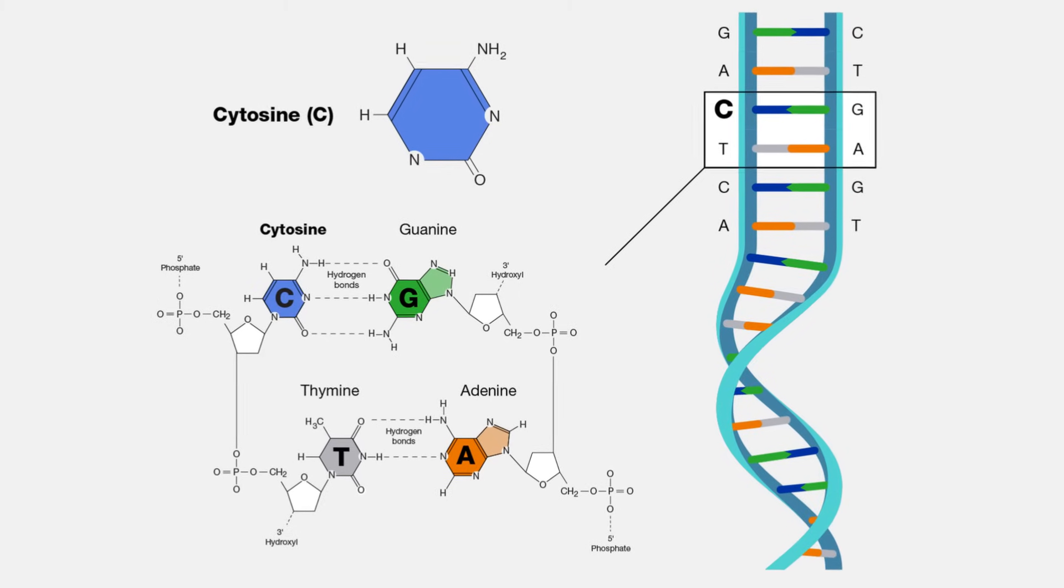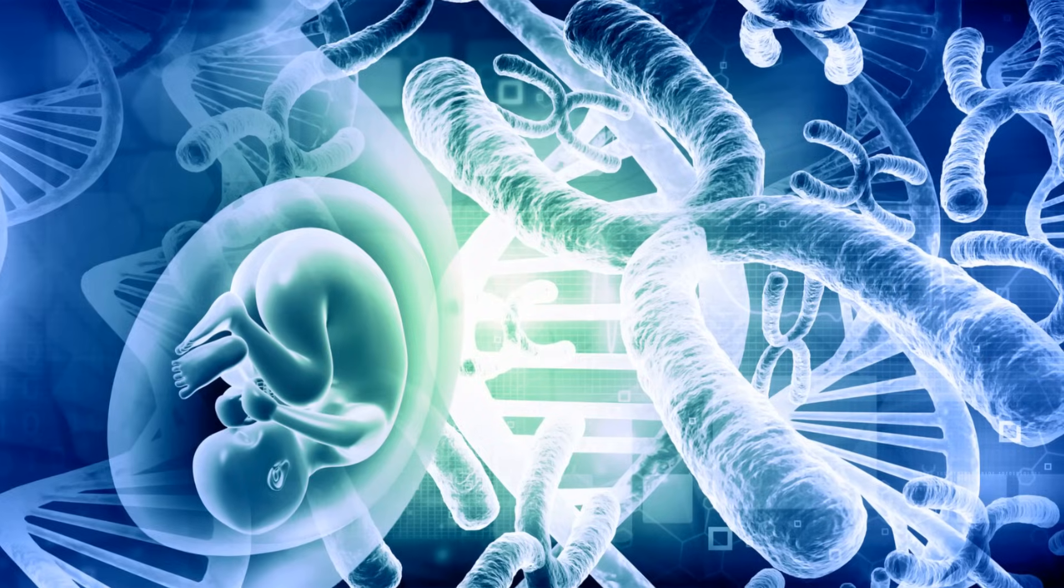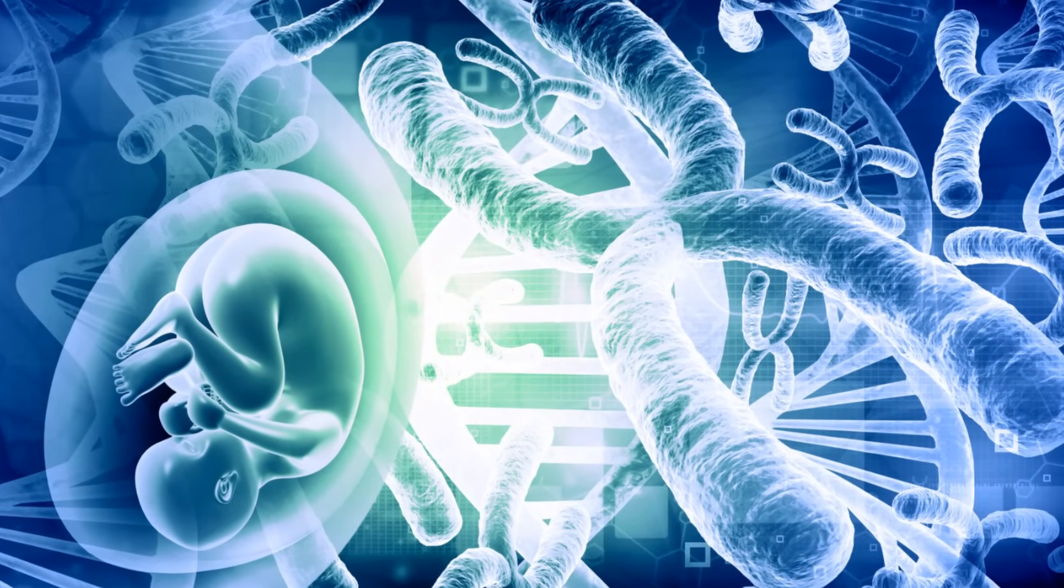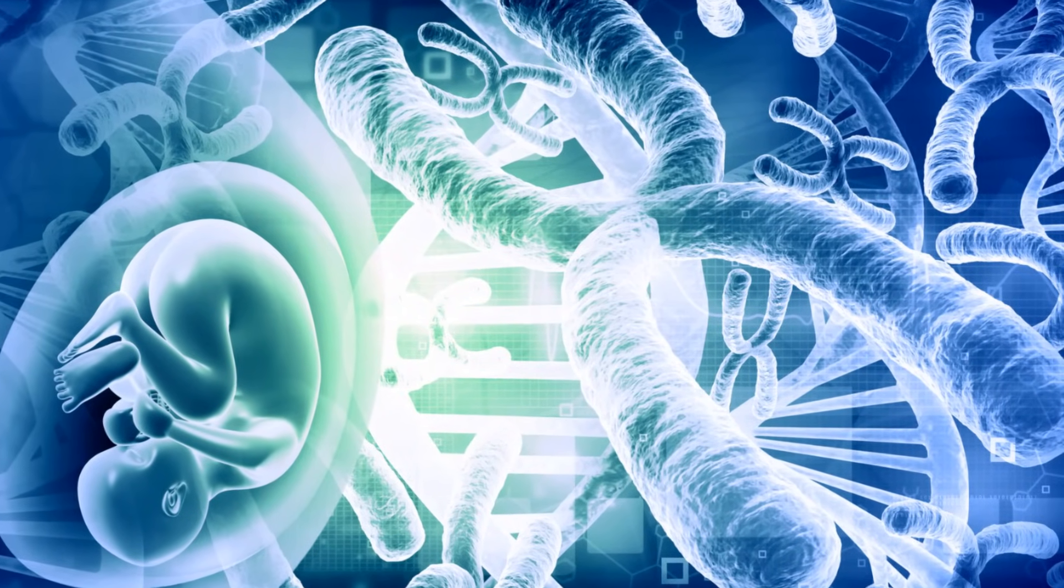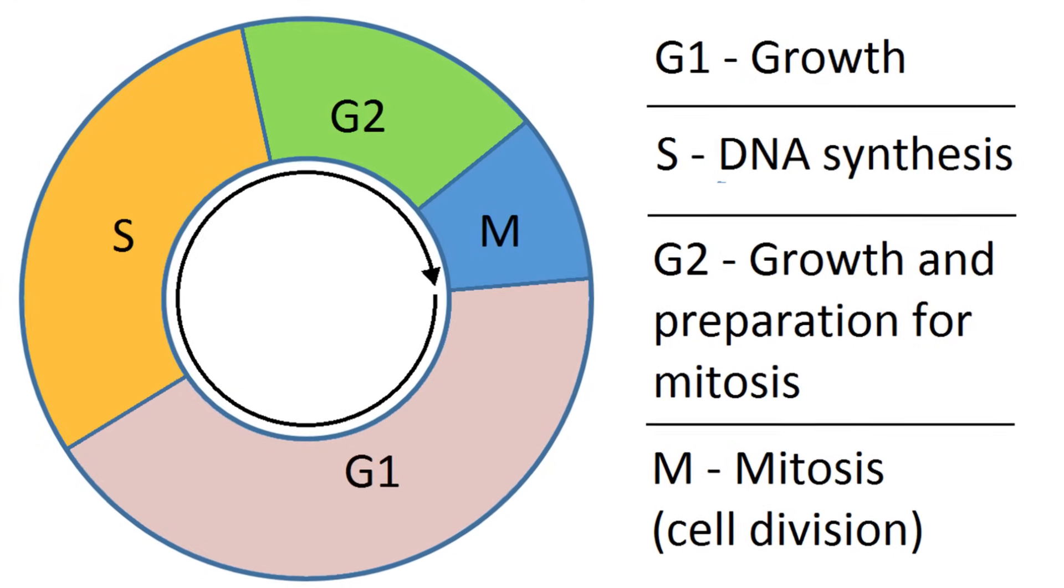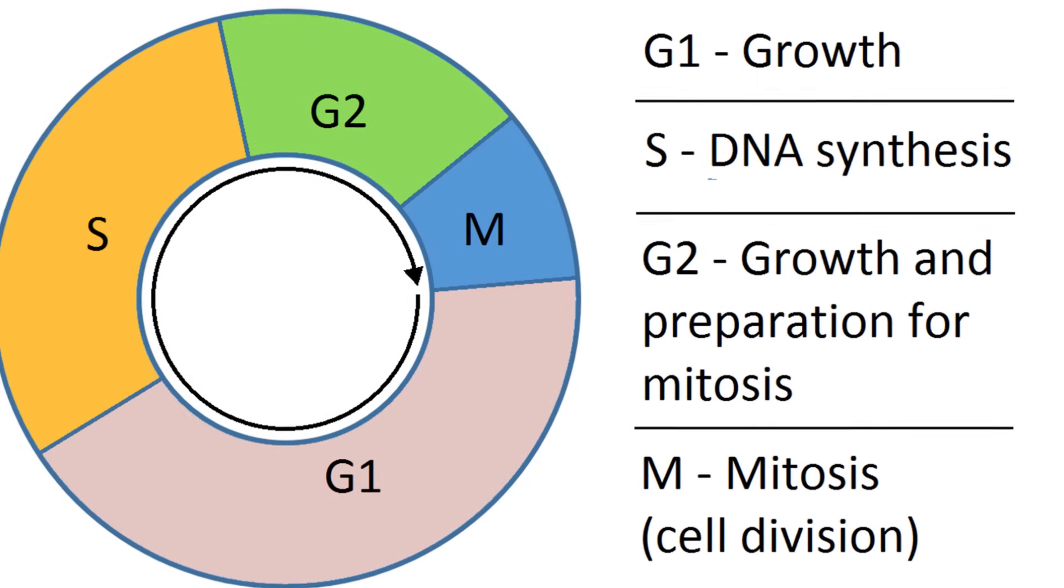Next up is cytosine, or C. This pyrimidine nucleotide pairs with guanine and is essential in the formation of our genetic blueprint. Cytosine also aids in the regulation of protein synthesis, ensuring our cells function smoothly.